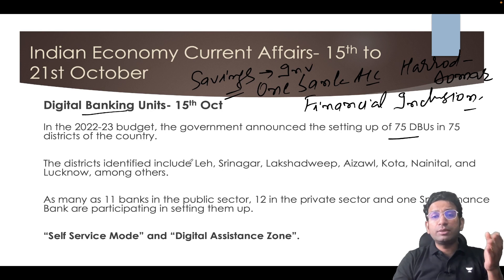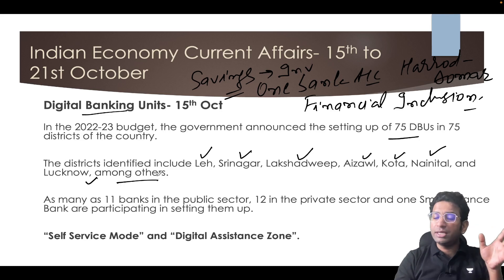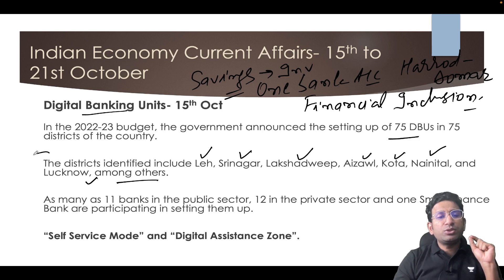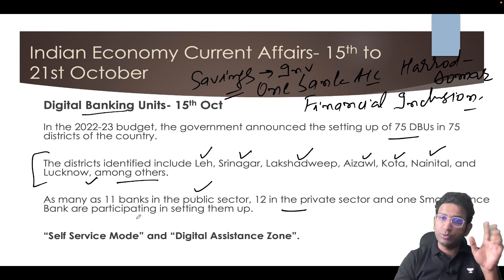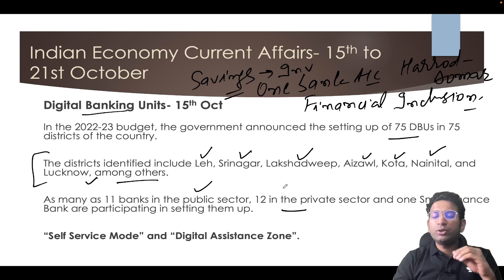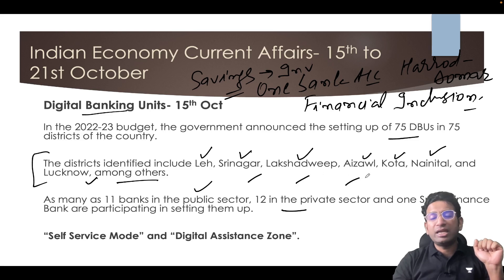The government provided the locations where these branches will be set up — places like Leh, Srinagar, Lakshadweep, Aizawl, Kota, Nainital, and Lucknow, among others. As many as 11 public sector banks, 12 private sector banks, and one small finance bank are participating in setting up these units. Now, how are these units different from normal conventional banking branches? Normally when you go to a bank branch, you find people sitting at counters to deposit money, withdraw money, and avail other banking services.